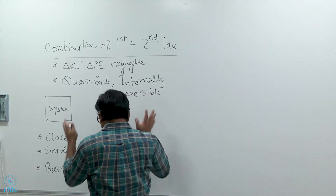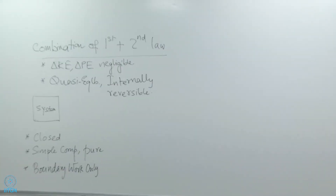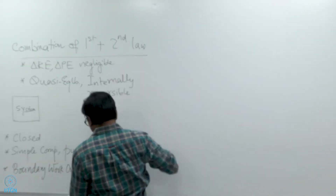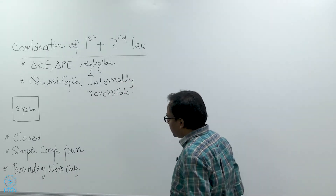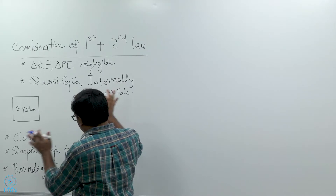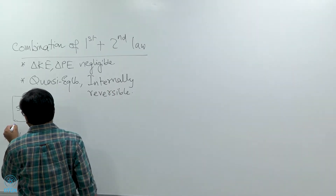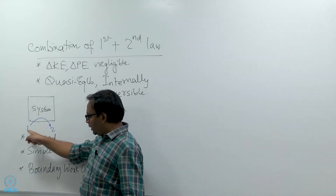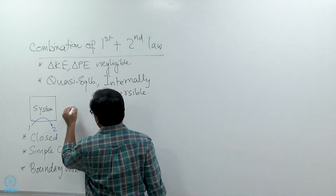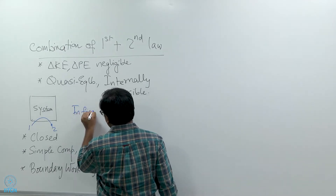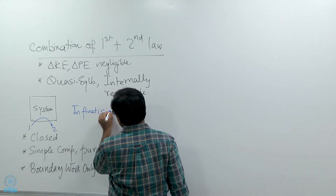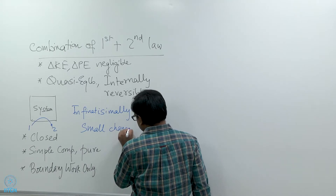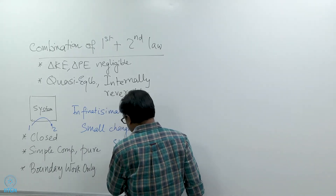So this might seem very restrictive, but we will see that the final relation we get by combining the first and second law will be quite general, although it might at the beginning seem very restrictive. After taking all these assumptions, let us assume that the system changes state from state 1 to state 2, and let us say this is an infinitesimally small change in state from 1 to 2.